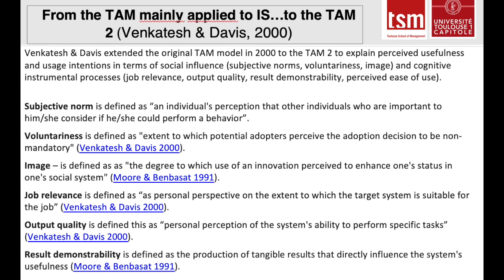Voluntariness is defined as the extent to which potential adopters perceive the adoption decision to be non-mandatory, based on his or her own decision. Image is defined as the degree to which use of an innovation is perceived to enhance one's status in one's social system. Job relevance is the personal perspective on the extent to which the innovation is suitable for the job and brings benefits. Output quality is the personal perception of the innovation's ability to perform specific tasks. Result demonstrability is defined as the production of tangible results that directly influence the innovation's usefulness.